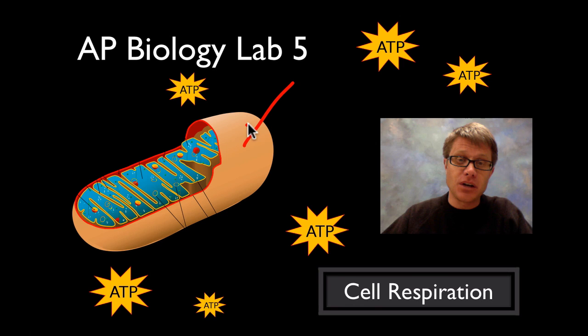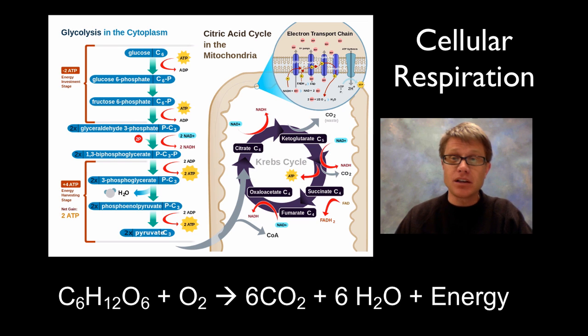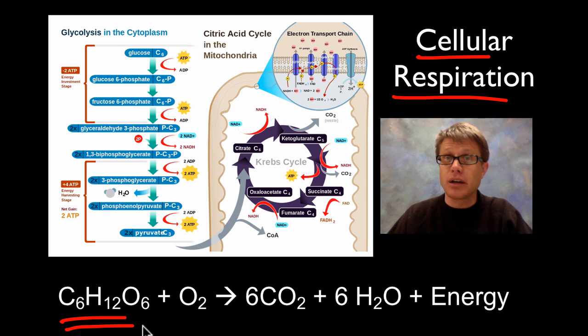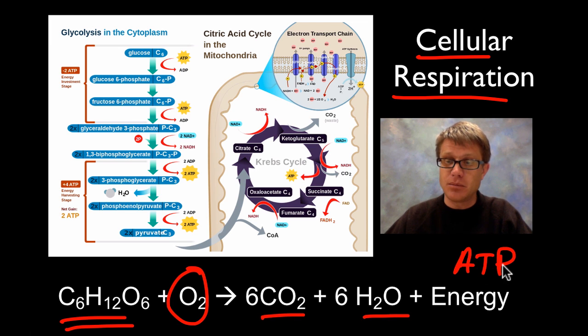And in order to do that in eukaryotic cells we need this, which is the mitochondria. Basically what goes on in cellular respiration, I'm not going to go into too big of depth, but what we're doing is we're taking a sugar like glucose and in the presence of oxygen we're breaking that down into carbon dioxide, water, and we're producing energy in the form of ATP.